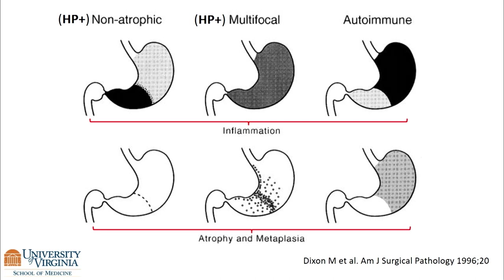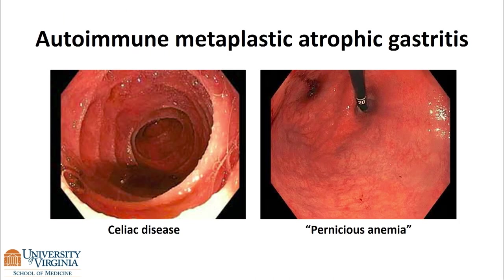These are the areas we should spend the most time looking at. In contradistinction, in patients with autoimmune gastritis, you see a corpus-predominant inflammation and intestinal metaplasia. This is an example of a patient who clearly has celiac disease from scalloping, but on careful endoscopic exam of the stomach there is effacement of the proximal stomach — a patient with autoimmune metaplastic atrophic gastritis and pernicious anemia.